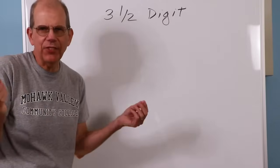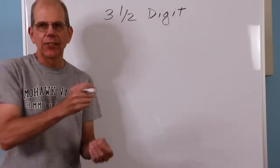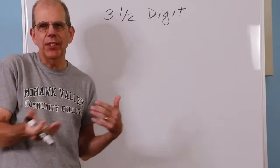So that meter I was just looking at is typical, and it would be classified as a 3 1/2-digit meter. 3 1/2. What the heck is half a digit? I mean, a digit's obvious. 0, 1, 2, 3, 4, 5, 6, 7, 8, 9. What's half a digit?